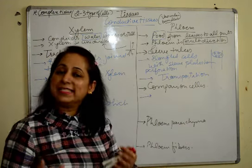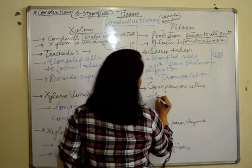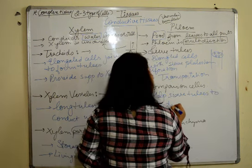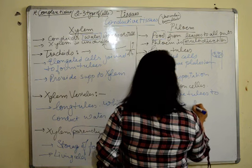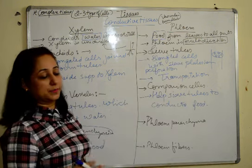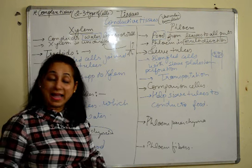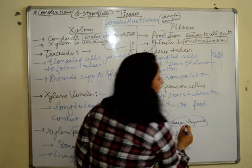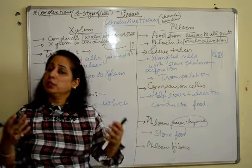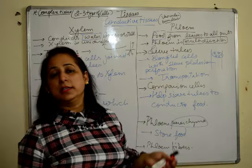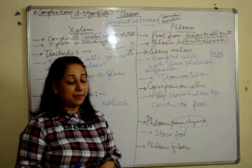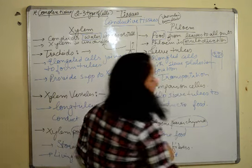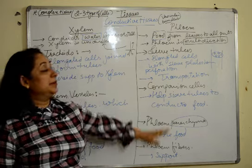Companion cells help sieve tubes to conduct or transport food. Phloem parenchyma stores food, because this food is required for the conduction of food — the activity requires energy, which is given by the stored food. Phloem fibers provide support to the phloem.